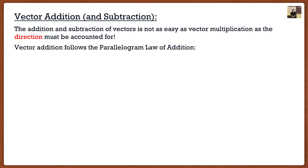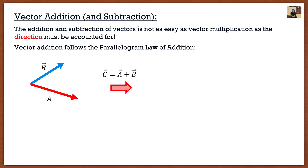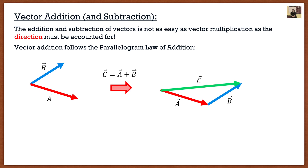Let's say we have two vectors, vector A and vector B, and we want to add them together. What we want to do is create a vector C which is vector A plus vector B. We take vector A, place it down, and then take vector B and place it on top of vector A. The resultant vector C is going to start at the tail of A and go to the head of B.